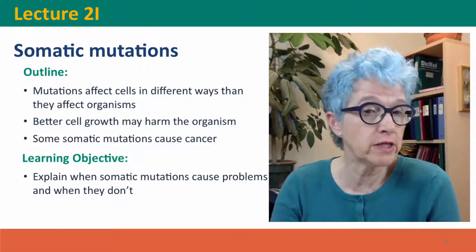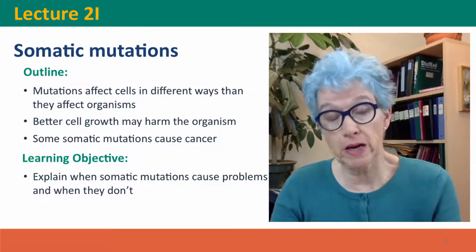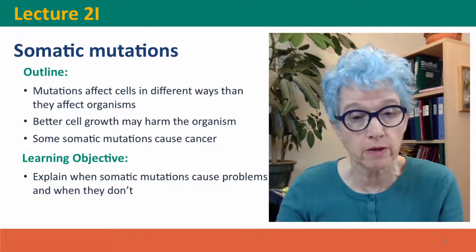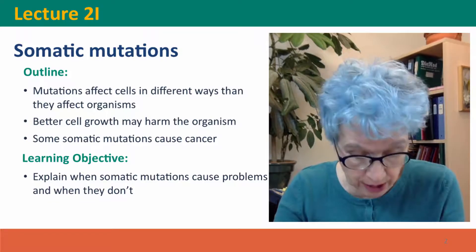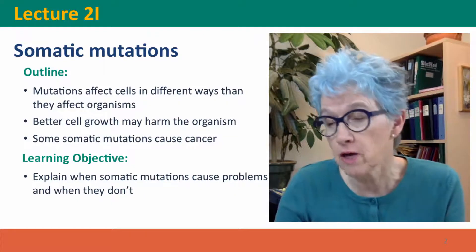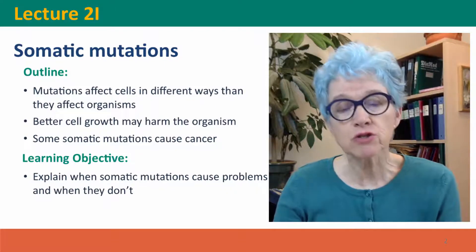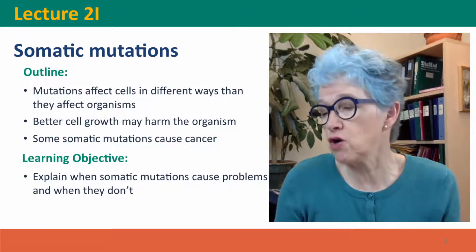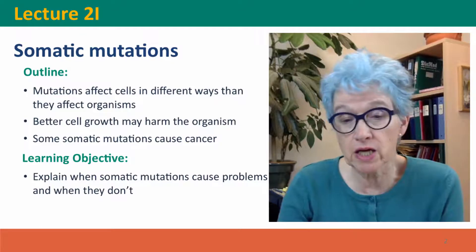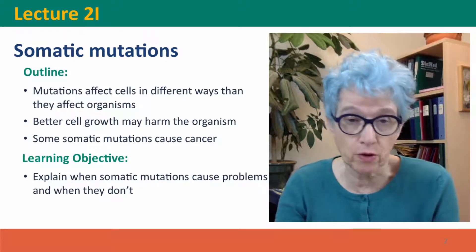In the last lecture, we made the distinction between germline mutations in the cells that become our gametes and are passed on to the next generation, and somatic mutations in all the other cells of our body, which are not passed on but die when we die. Here we'll be thinking about how mutations in these somatic cells affect us.